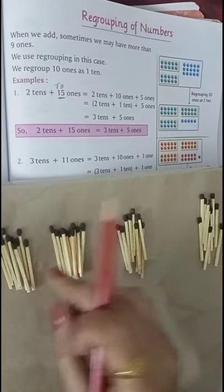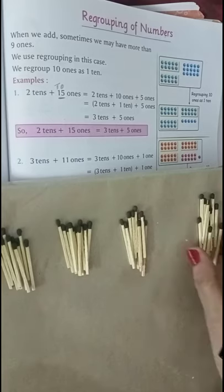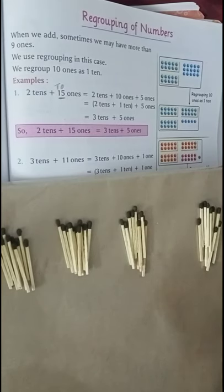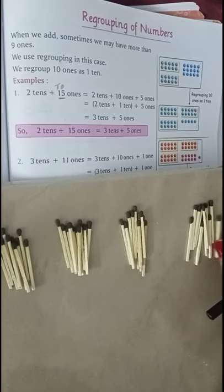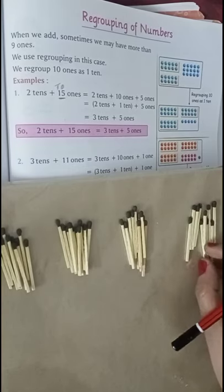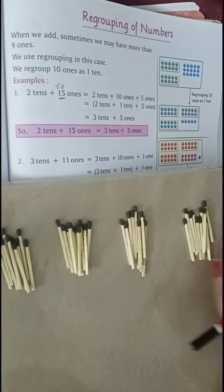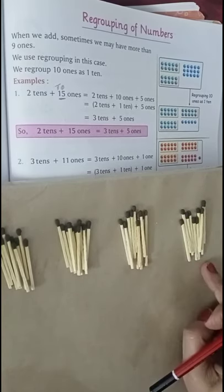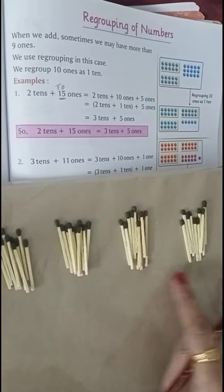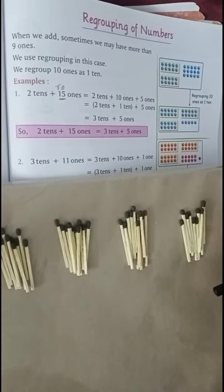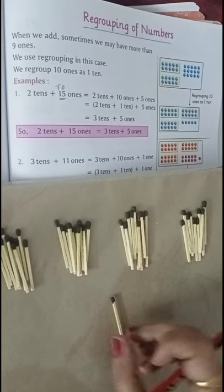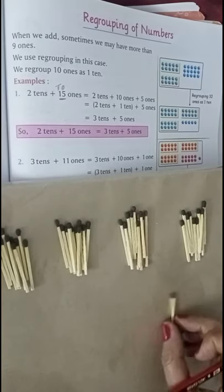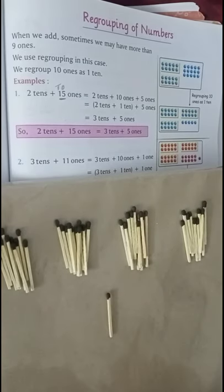11 ones, how do I divide this? 10 ones plus 1 one. How many total tens are here? 1, 2, 3, 4. It has become 4 tens plus 1 one.